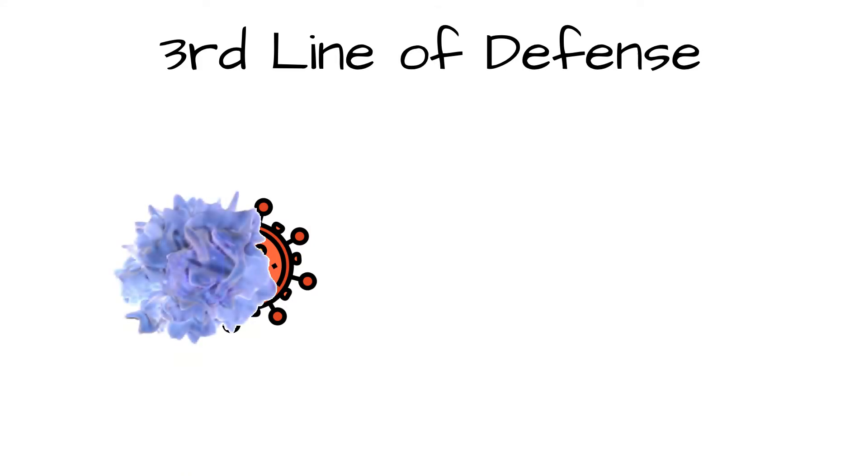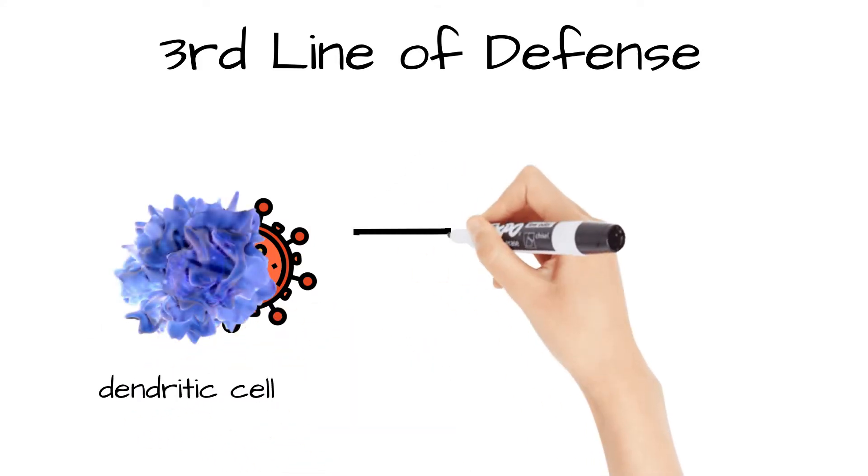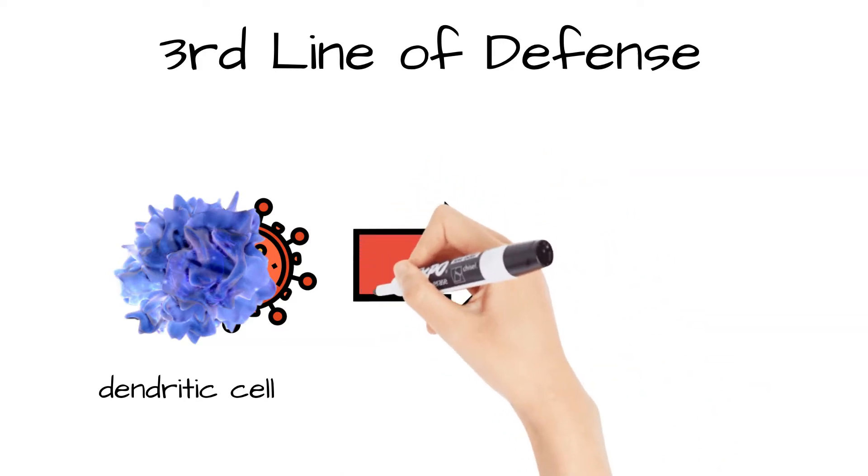It's frequently started by cells of the innate immune system. For instance, a virus gets through the first line of defense and enters the body. A dendritic cell, part of the innate immune system, encounters this pathogen. It then proceeds to present certain parts of it, called antigens, to lymphocytes in the lymphoid tissue.